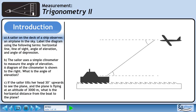A sailor on the deck of a ship observes an airplane in the sky. Label the diagram using the following terms: horizontal line, line of sight, angle of elevation, and angle of depression.